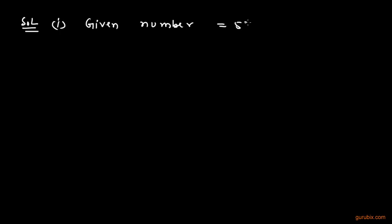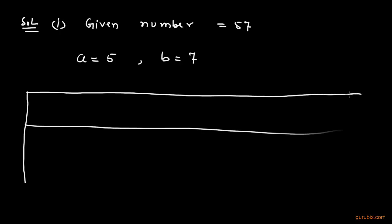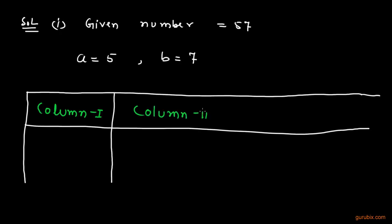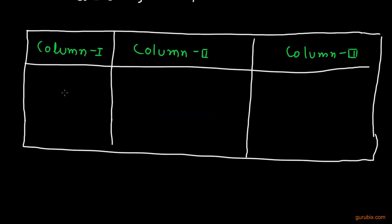First of all, we shall note the given number. The given number is 57. We shall let the tens digit of this number be A and the unit digit be B. So A equals 5 and B equals 7. Now we shall prepare a table with three columns: column 1, column 2, and column 3. In column 1 we calculate A², in column 2 we calculate 2AB, and in column 3 we calculate B².